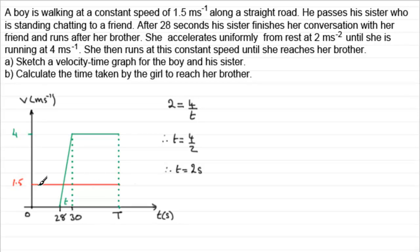So what about the area then for the boy? Well we can see that the distance traveled by the boy, let's just put it down, distance traveled by boy, distance by boy is going to equal the area of the rectangle which is going to be 1.5 times t.